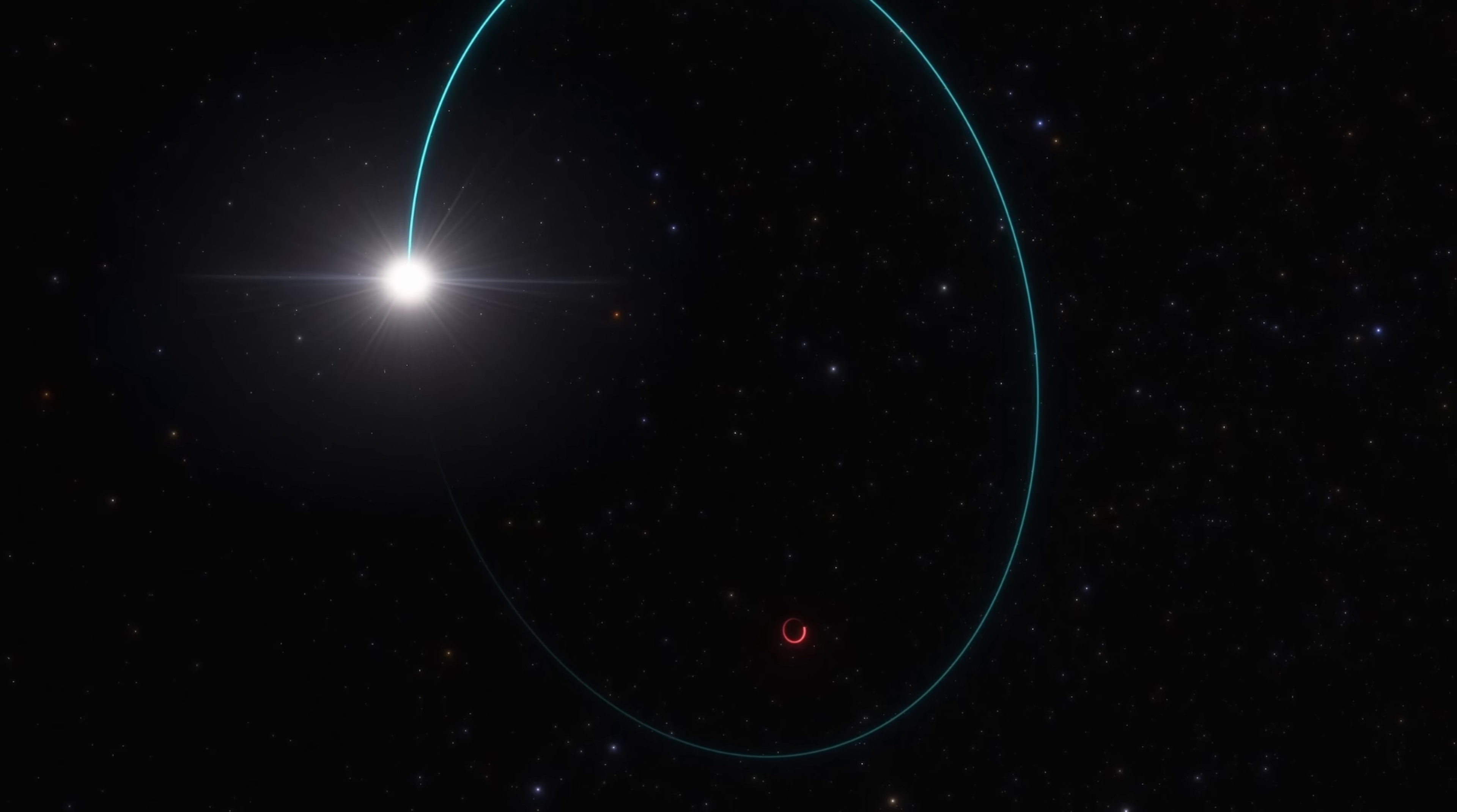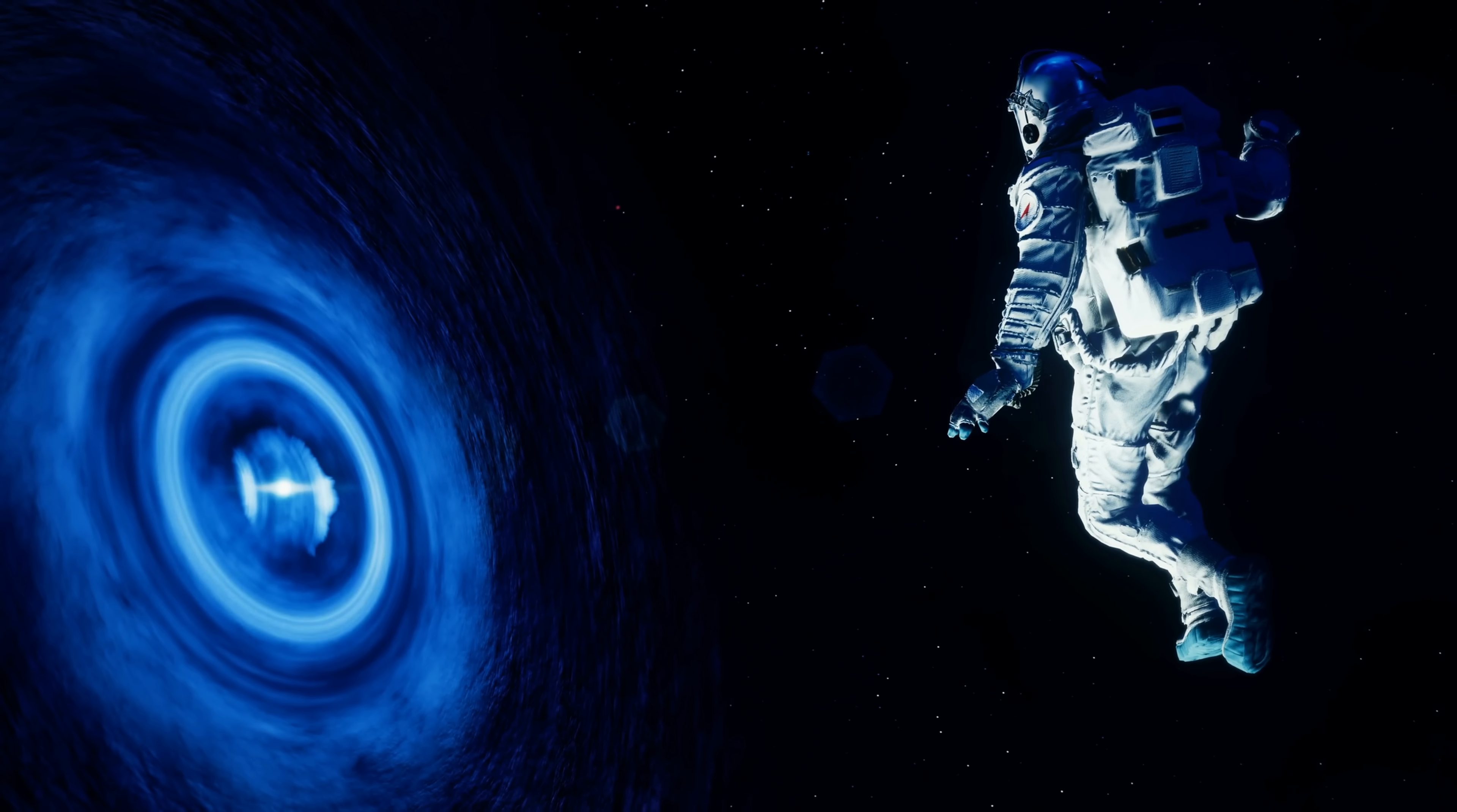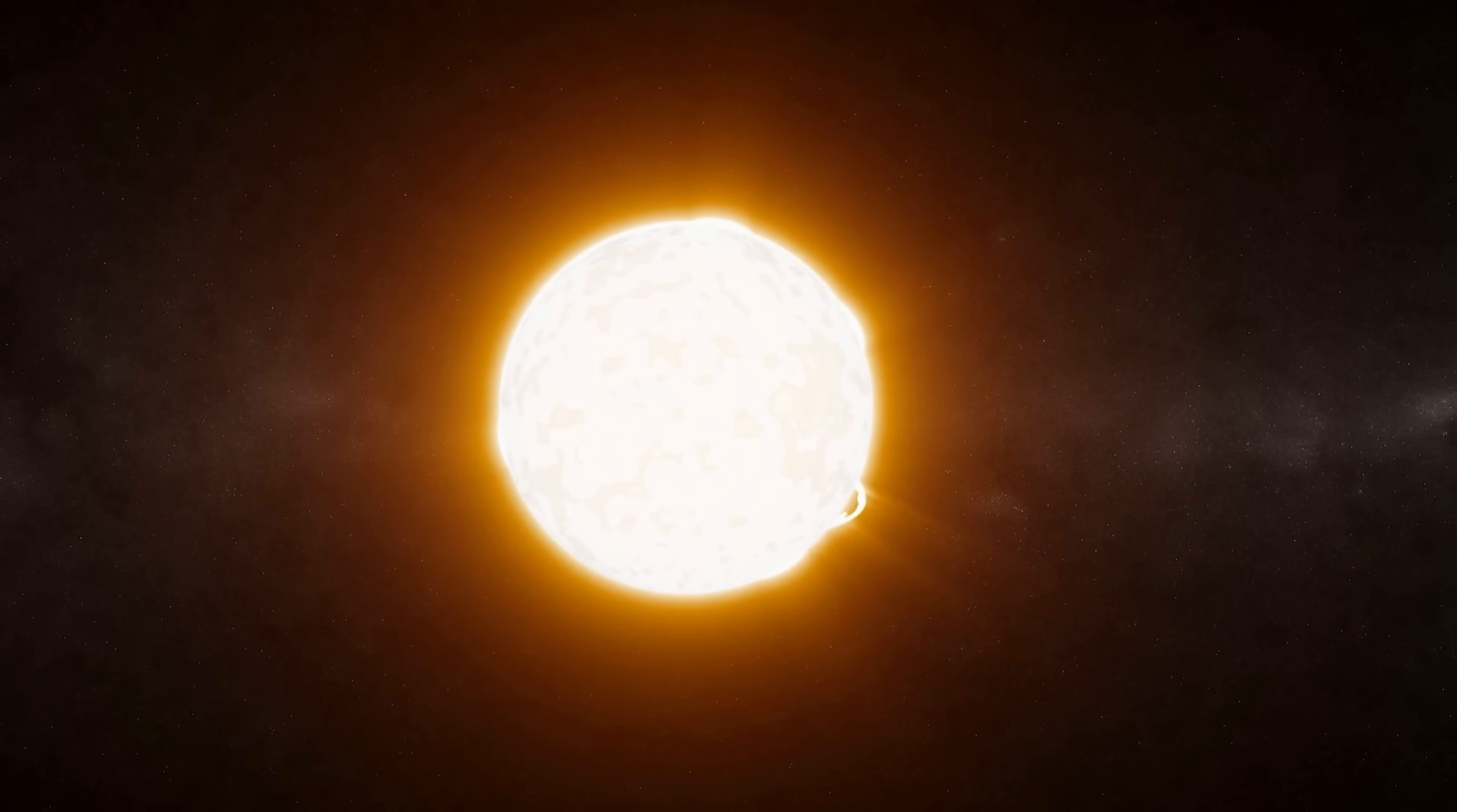Whereas Gaia BH3, discovered more recently, seems to have a black hole of 32.7 solar masses, which is considered to be unusually large and is also kind of difficult to explain. This actually makes it the heaviest non-stellar mass black hole in the entire galaxy, with the companion star in this case also being a somewhat primitive giant star.